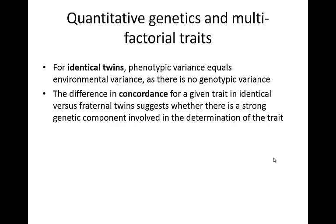When looking at many of these traits, it is handy to use identical twins where you can. The reason for this is that there should be no genotypic variance — identical twins should have identical background — so any variance that you're seeing between them must be due to environmental variance. You can also look at the difference in concordance for a given trait in identical twins versus fraternal twins. Since fraternal twins were raised theoretically in the same environment, you can see how closely a genetic component is involved in the determination of the trait, and really tease out whether something is more due to genetics or more due to environment.